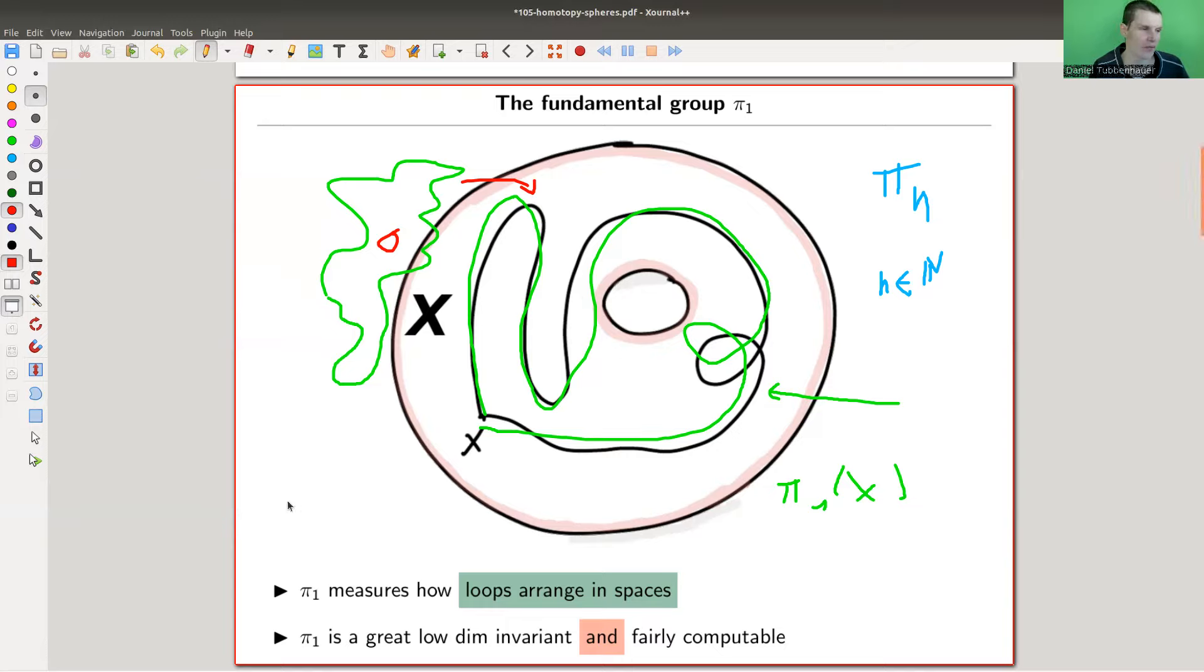So you have x, you have some base point somewhere, and you essentially throw a loop. So this is a loop in your space. And you see how the various different loops arrange themselves up to just pulling them around. That's what's called homotopy. So this loop, if it goes around the hole, and another loop, they're the same up to homotopy. So it essentially measures how loops arrange themselves in your space x.